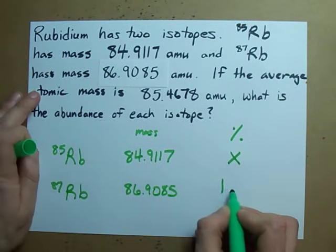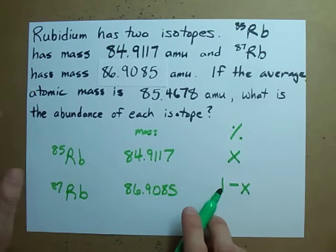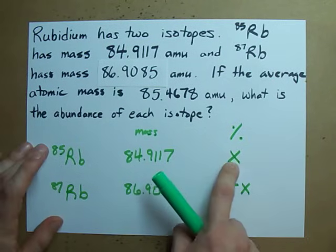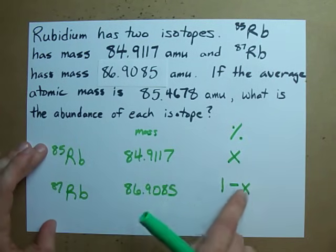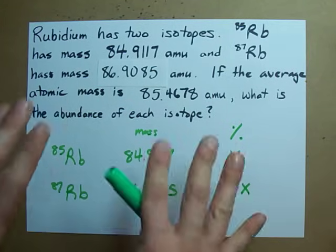Well, it's 100% minus X. Now I've written 100% as its decimal form here. We divide by 100. So X percent this, and it has to be 100% minus X remaining for this. Now we don't know what X is.